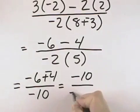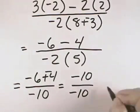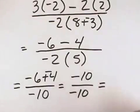And in our denominator, we also have negative 10. The negatives cancel. The 10s also divide out or cancel, leaving 1, so that our final answer is 1.